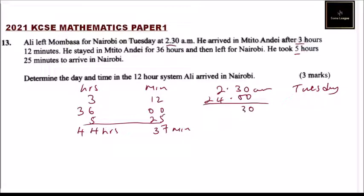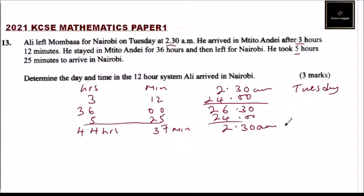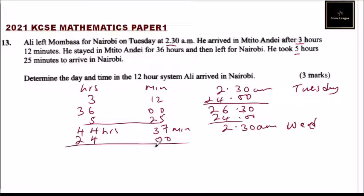Adding 2:30 a.m. plus 44 hours 37 minutes: we work through the calculation. Subtracting 24 hours from the total, we find he arrived at 2:30 a.m. on Wednesday. Subtracting another 24 hours, we have 20 hours remaining, with 7 minutes carried.